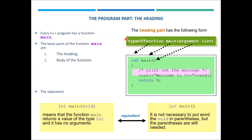The 'int' before main is the type of the function — every function has a type. In this case, the data type is integer. The third element is the argument list: inside the parentheses, if there is any input to the function, we mention all the parameters there. If there is no input, the brackets can be left empty.